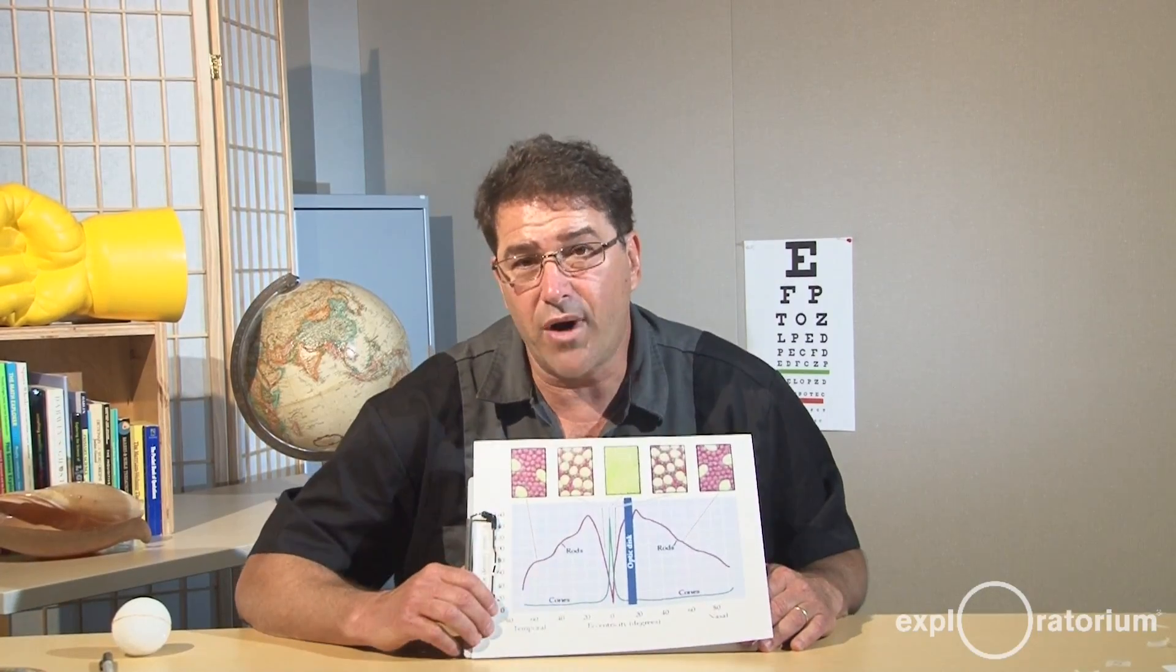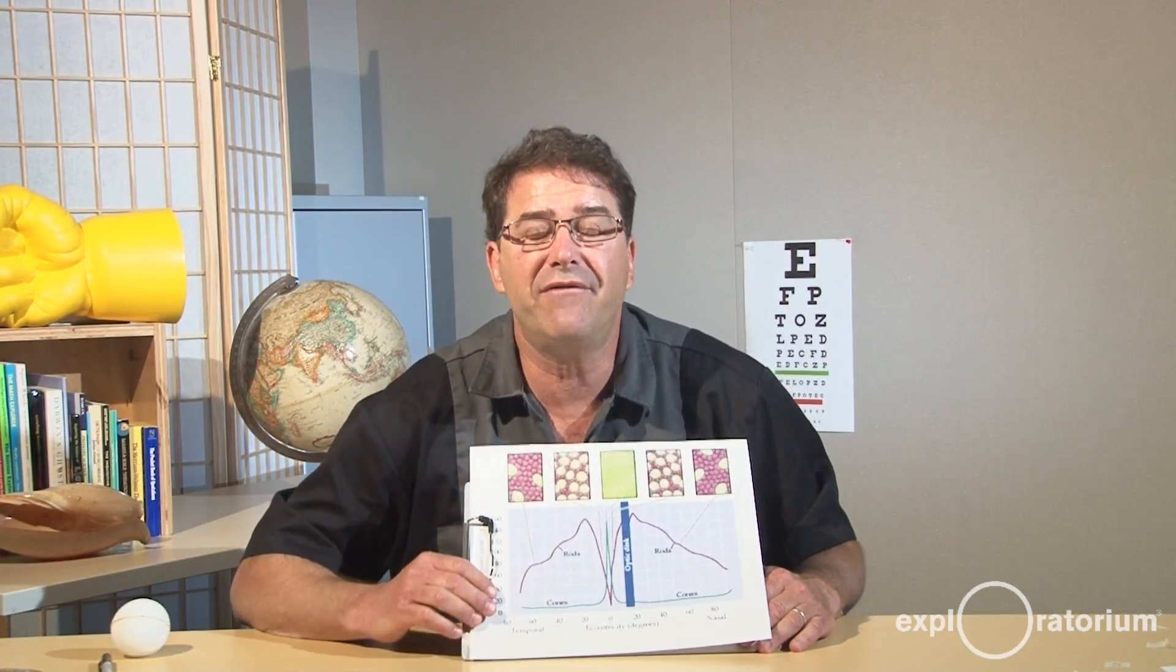So this distribution of rods and cones seems to make sense from an evolutionary context. Rods are much more sensitive to light energy and to motion. So out here on the periphery, that's when you need to know if something is rustling in the woods, or something is out in the forest, or somebody's coming from around the corner.